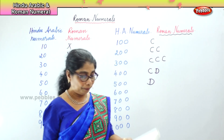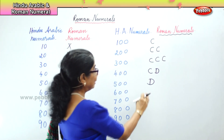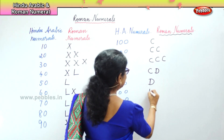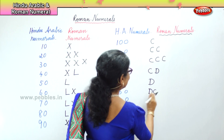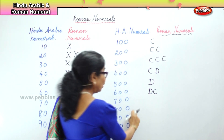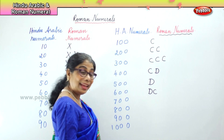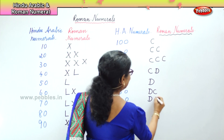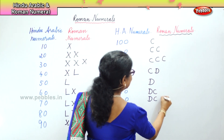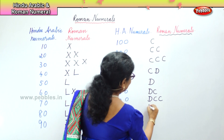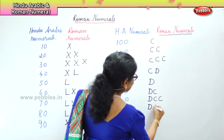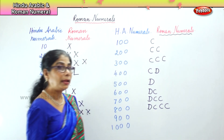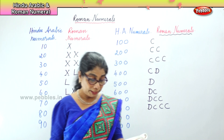Now for 600: how will you write it? D and C. 600 is DC — 500 plus 100. That will go on to 700 and 800. So this is 500, 600, 700. For 800: 500, 600, 700 and 800. Now when it comes to 900, again there is a change.